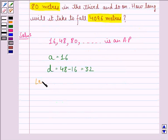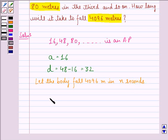Now, let the body fall 4096 meters in N seconds. So, we will have sum of N terms is given by N by 2 into 2A plus N minus 1 into D.